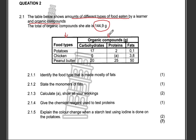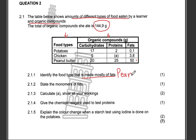The first question: identify the food type that is made mostly of fats. You go to the column for fats and the one that has the highest grams is obviously peanut butter. So the food type made mostly of fats is peanut butter.